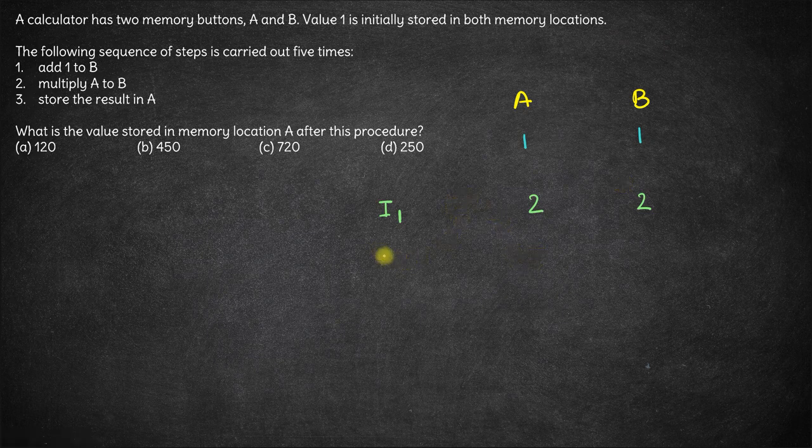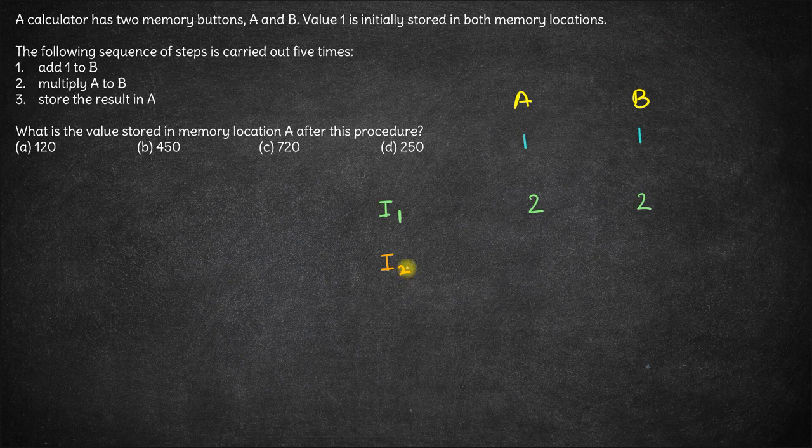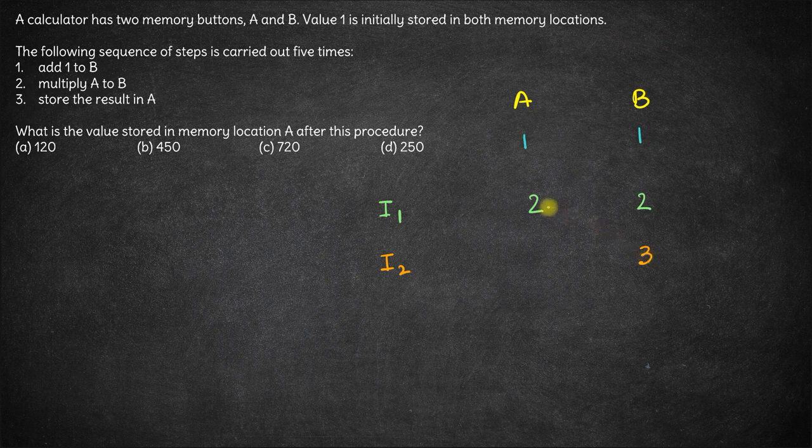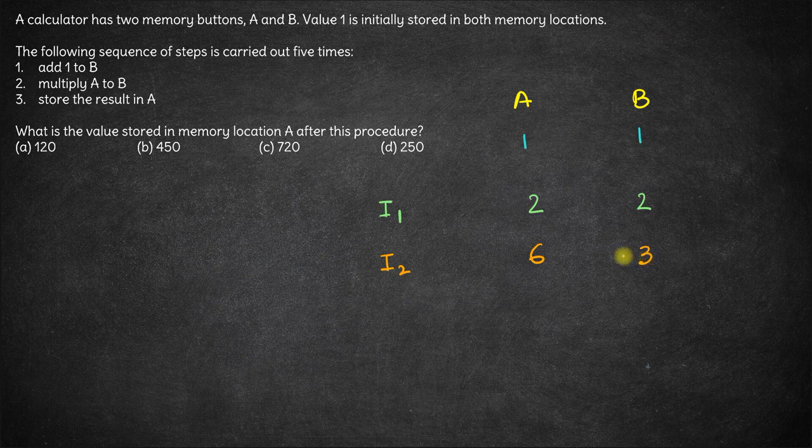In the second iteration, we add 1 to B, which becomes 3. We multiply A with B to get 6 and store this result in A. After the second iteration, A equals 6 and B equals 3.